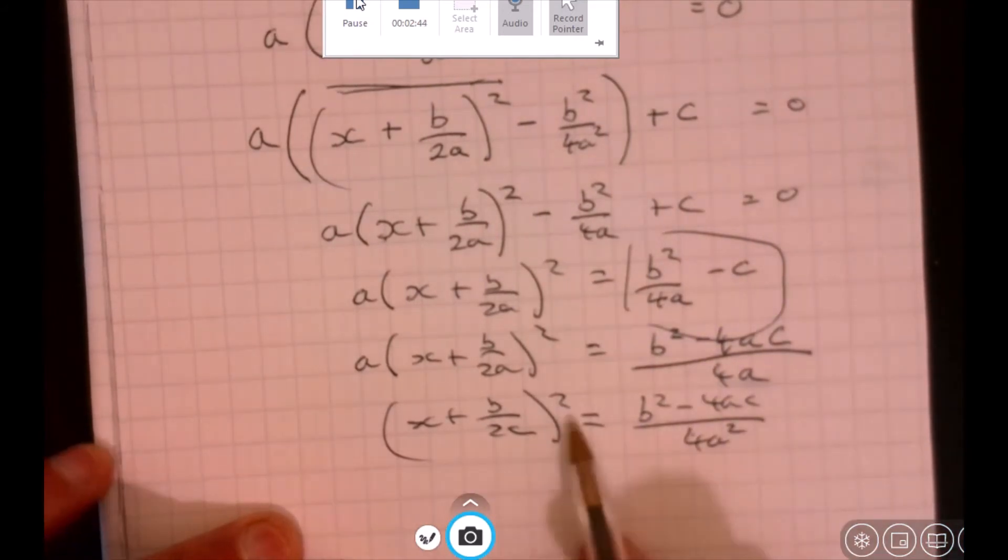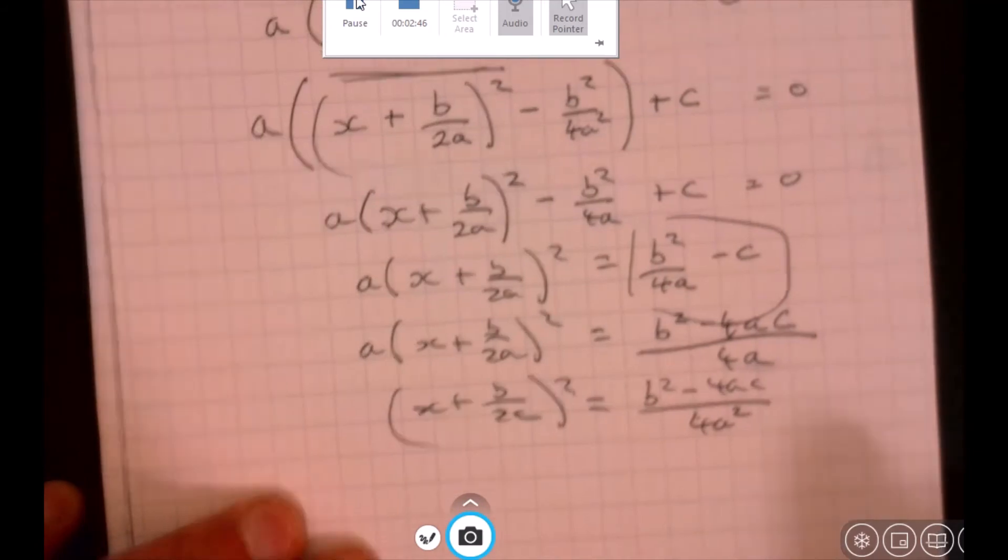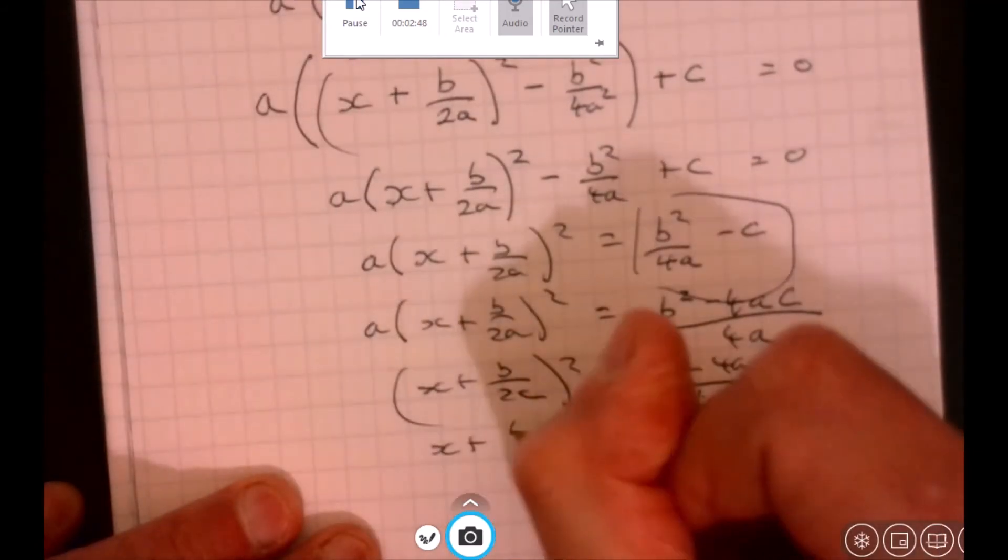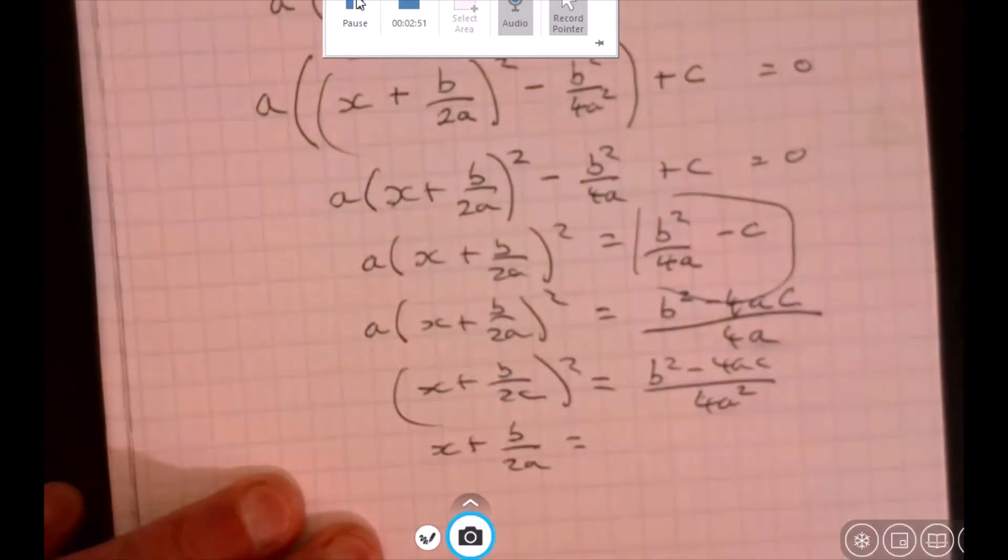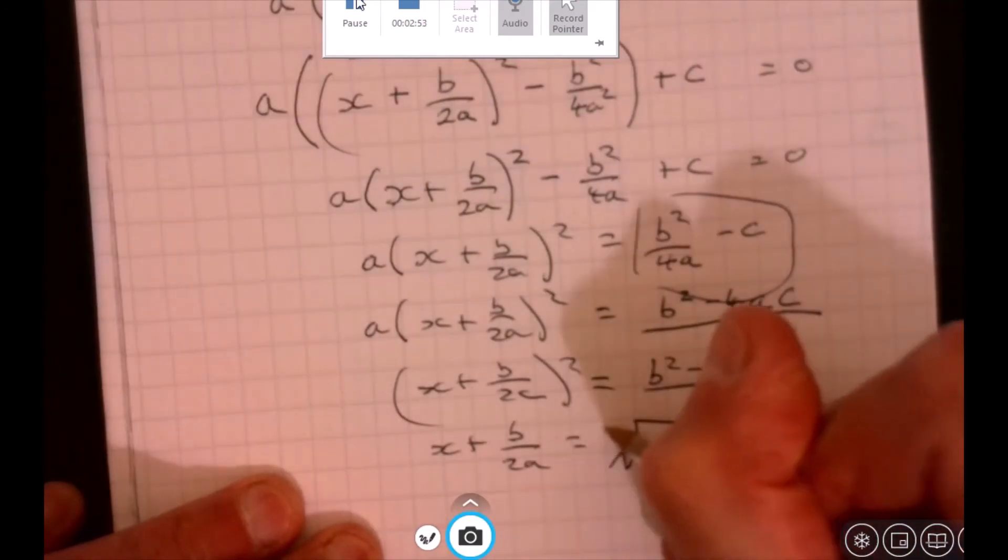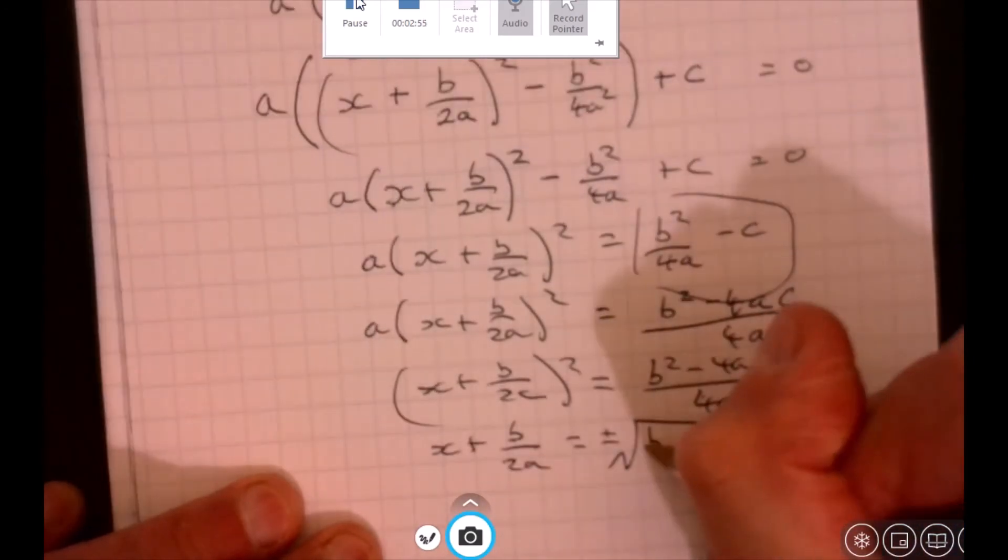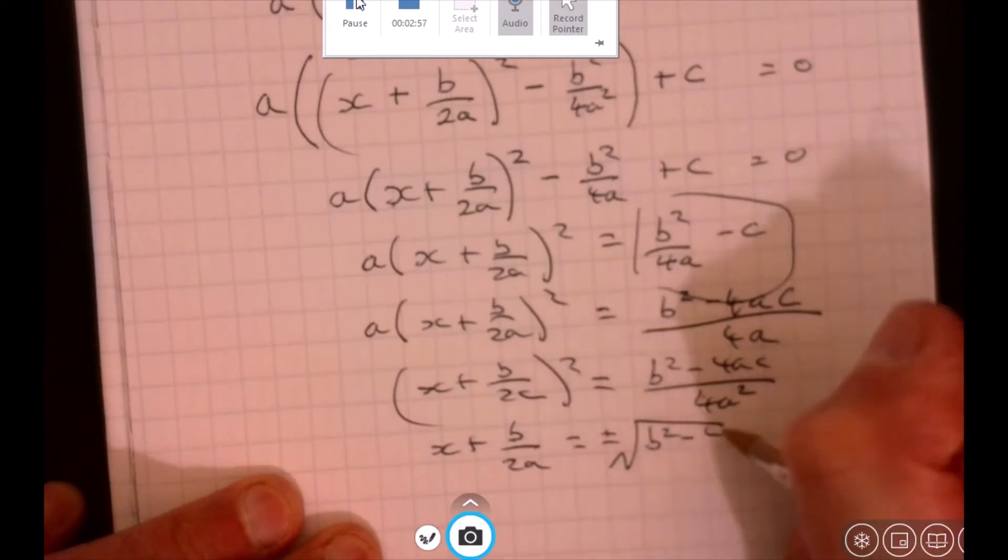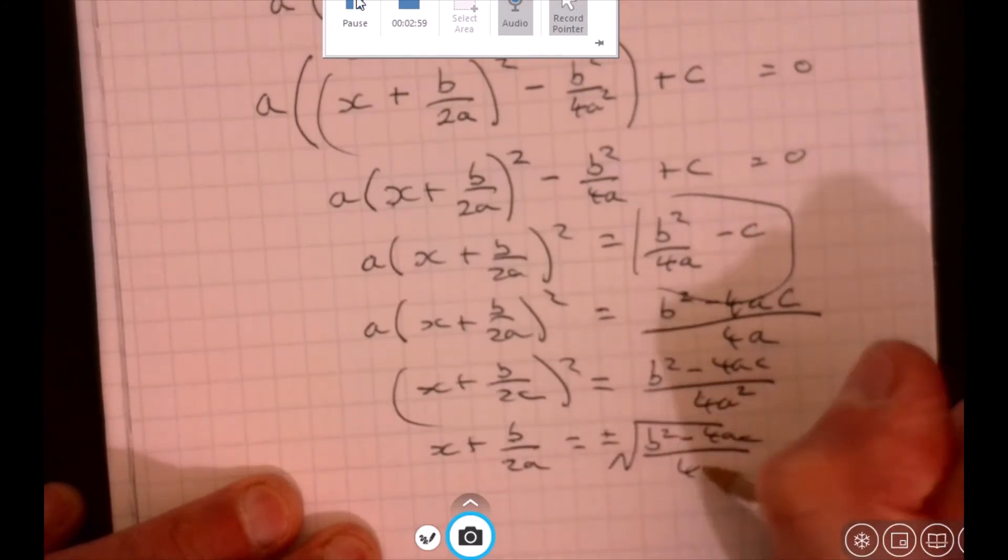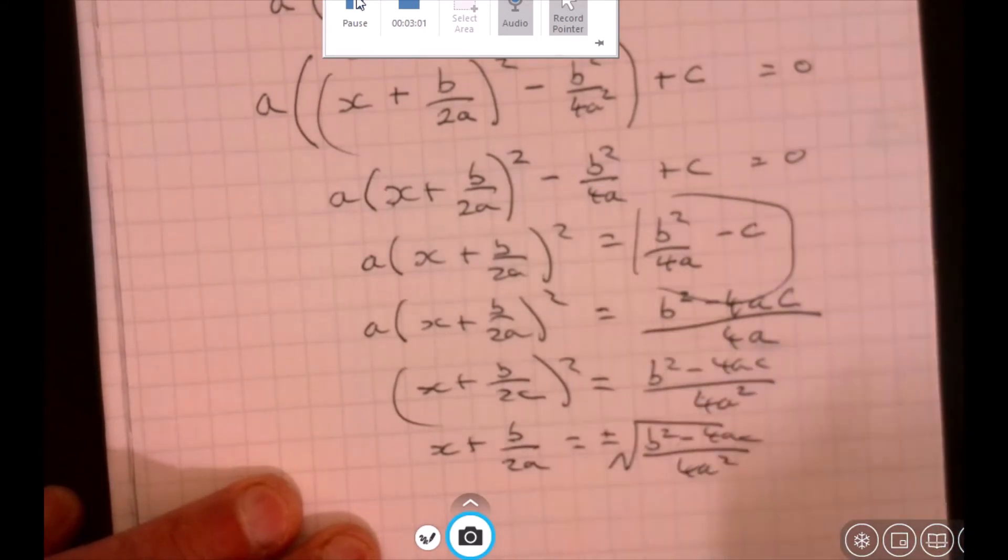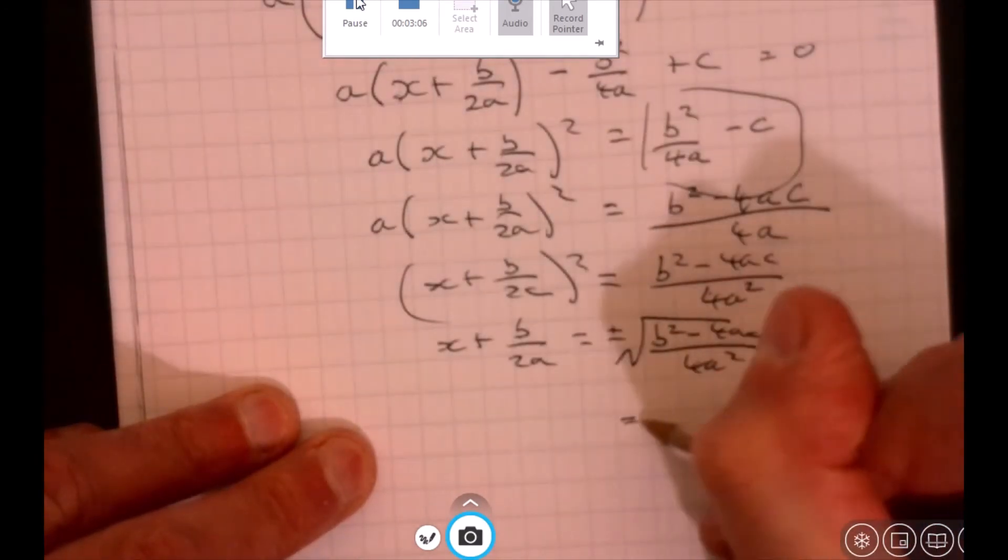Next step, get rid of this square. Square root, so we've got x plus b over 2a equals square root. Got plus minus - remember you can have two possible, plus and a minus there. Here we go, 4a squared. If I do square root of 4a squared, it's equal to 2a.